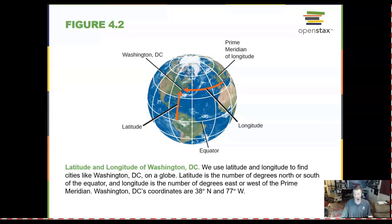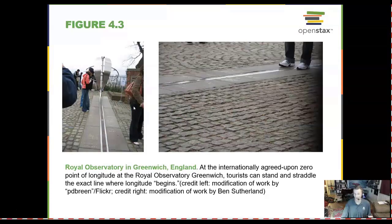Here is an example of latitude and longitude in our nation's capital. We can see that lines of longitude begin in England and go west. Lines of latitude begin at the equator and go north to the pole. The Royal Observatory in Greenwich, England is where the international line of longitude begins — the zero point.